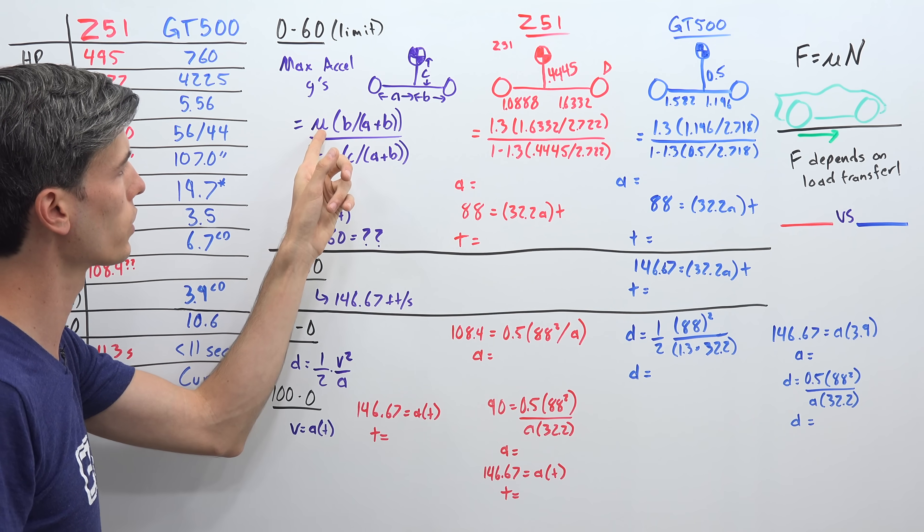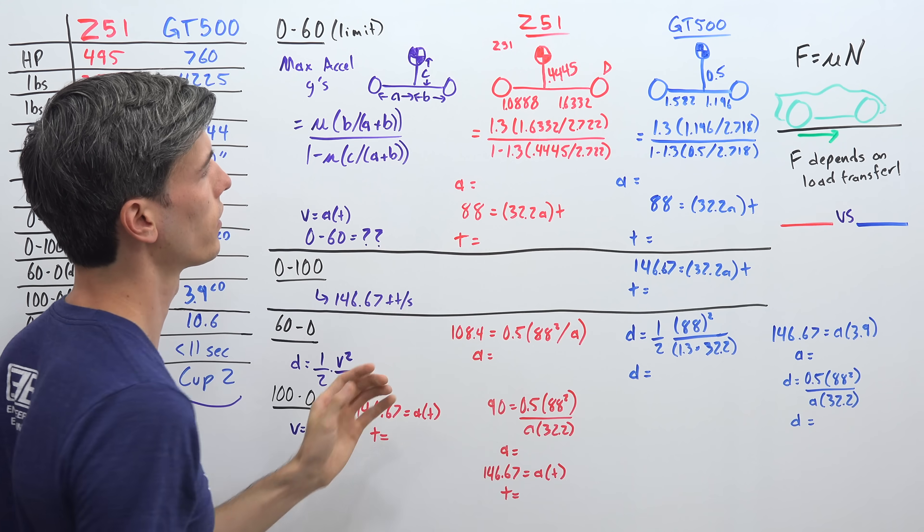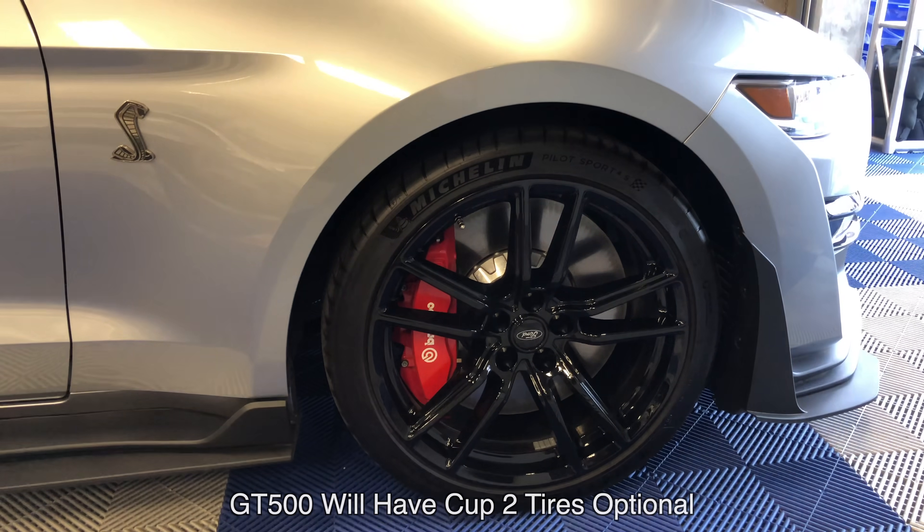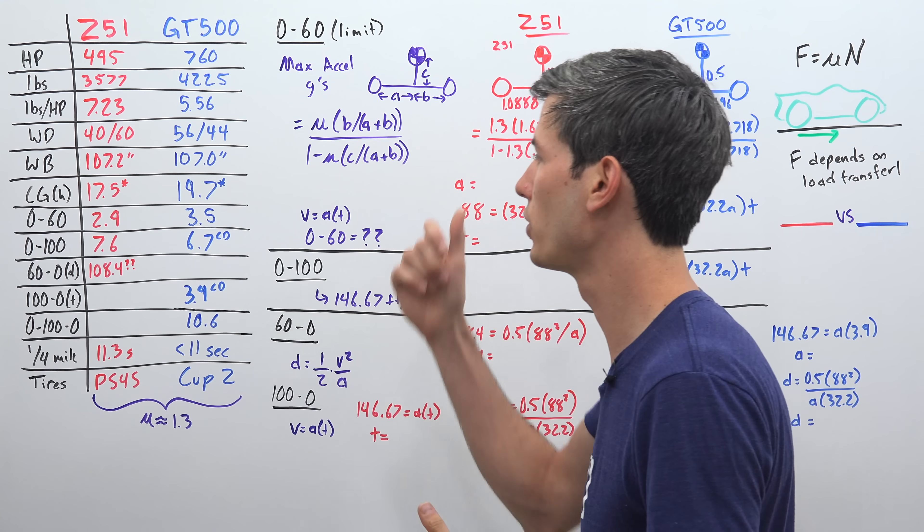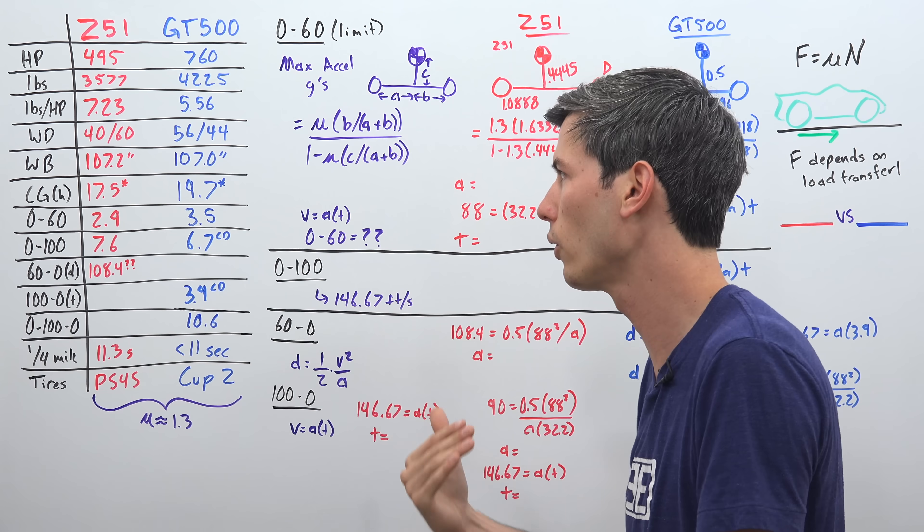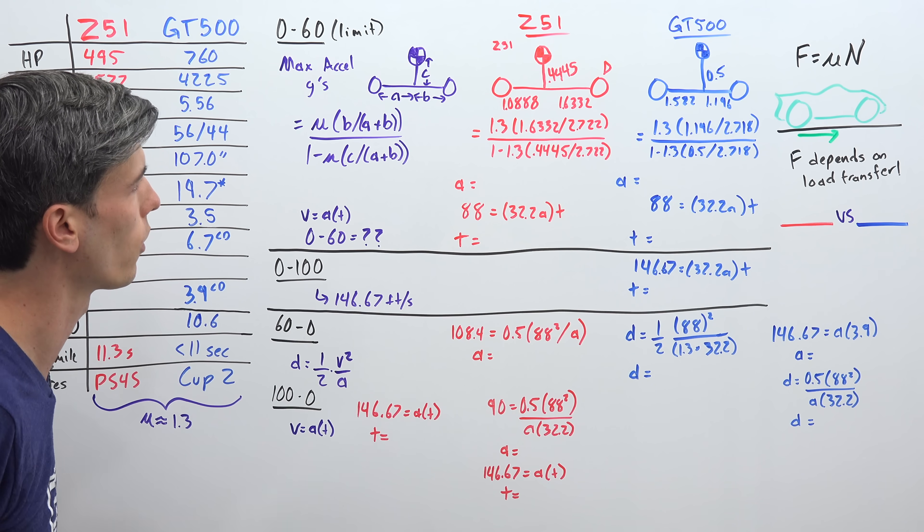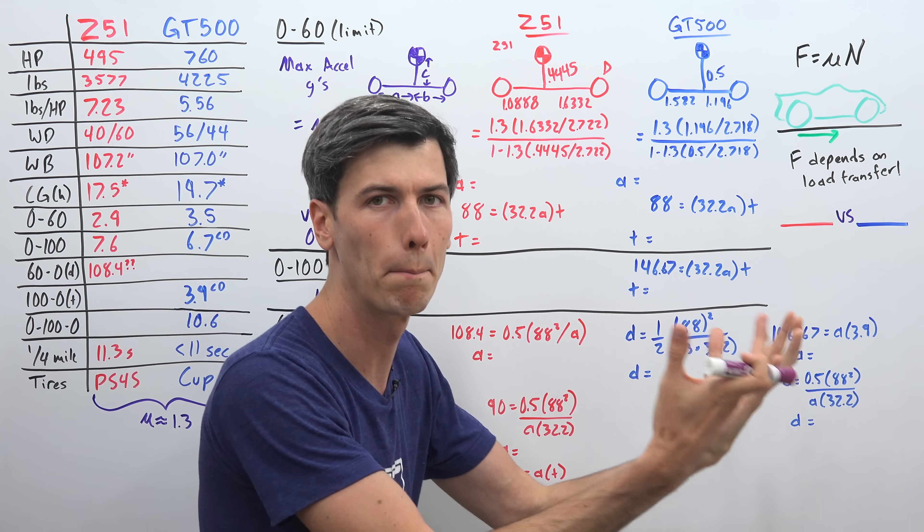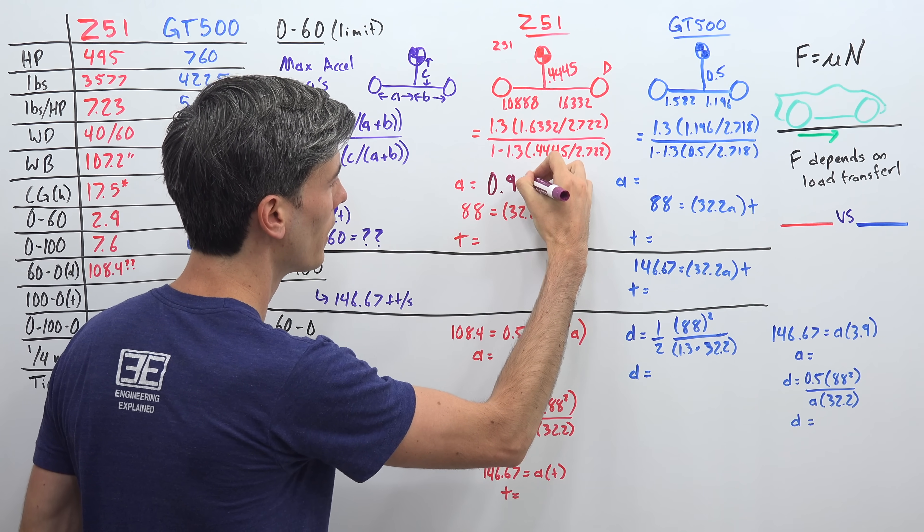And that's based on this equation where we look at the frictional coefficient. And then we're just looking at a difference in where the center of gravity lies as far as on this x-axis and then on this y-axis here as far as how tall is that center of gravity. And so for both tires, we're going to assume a frictional coefficient of 1.3. That's not entirely accurate. We don't know what the actual frictional coefficient is. And the Corvette is on PS4S tires versus the GT500 is on Cup 2 tires, which should be a little bit stickier. But the GT500 is also heavier, which is going to reduce that frictional coefficient a little bit. So we're just going to say we're going to call it even as far as tires are concerned at 1.3 for the frictional coefficient of the tires. So we can start to plug in the numbers here using this equation to find out what is that maximum theoretical acceleration limit based on the load transfer that's occurring.